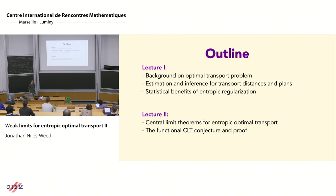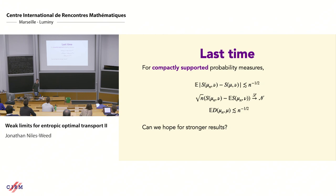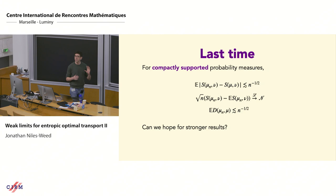A big focus in this talk will be on the correct forms of the central limit theorems for the objects I talked about last time — distributional limits centered at the right quantities that allow us to do inference, not only on the distance but also on the coupling itself. So these are the results I highlighted last time. The first one says that up to some large constants depending on the dimension and diameter of the set, the expected gap between the regularized Wasserstein distance between mu and nu and the empirical counterpart shrinks at the rate n to the negative one-half.